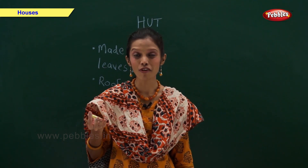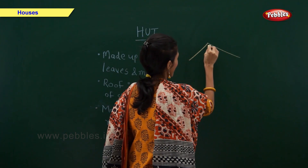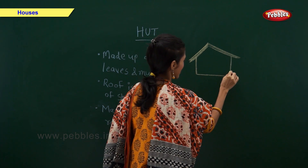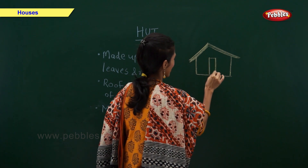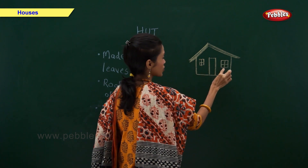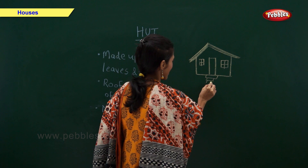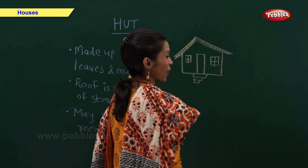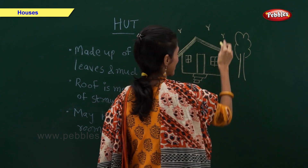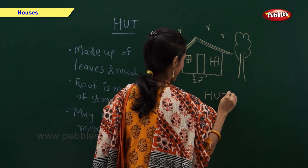Now friends, shall we draw a picture of a hut? Will you all help me? Come on, let us draw. This is the roof made up of straws. This is the door. And these two are windows. These are the staircases of the hut. Now let us draw one small tree. Did you all like it? Will you all try it in your notebook?